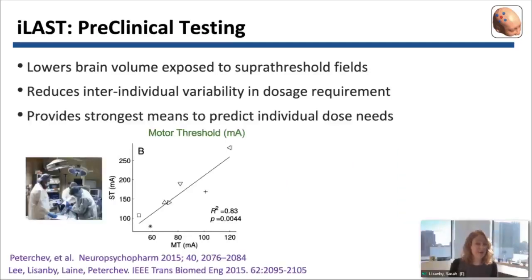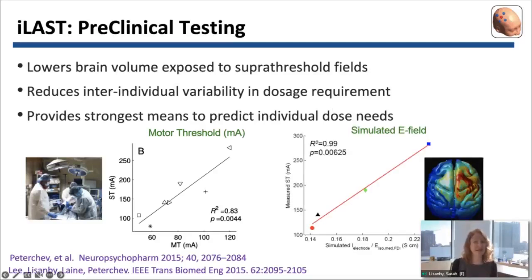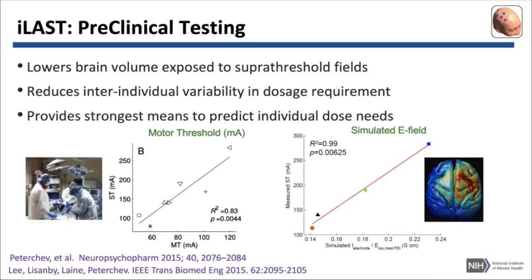In our preclinical model, individual pulse amplitude titration is a very strong way of predicting individual dose needs. The motor threshold for inducing a twitch in a hand muscle with individual electrical pulses on the x-axis predicts the seizure threshold on the y-axis. We've also shown that simulation of the electric field induced in the hand knob predicts dose requirement for inducing seizures, suggesting we might be able to use computational modeling to predict dose requirement without actually titrating seizure threshold.